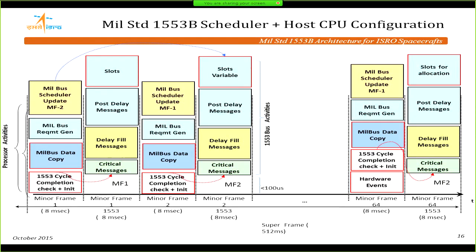Every cycle, we ensure the previous scheduled cycle has completed before starting new messages. The predictable delay is kept within specification — critical messages must start within 100 microseconds as per spec. Post-delay and fill messages follow accordingly. A double-buffering or ping-pong buffering scheme is used: while the protocol chip executes one minor frame, the scheduler updates the next frame. Hardware events are also ensured to start within 100 microseconds.